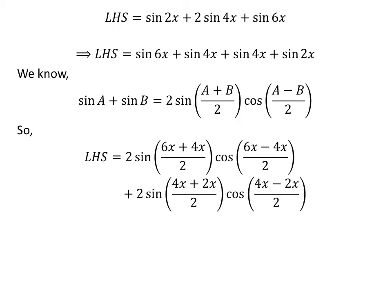Application of the above identity gives us the left hand side equal to 2 times sine of (6x plus 4x)/2 times cosine of (6x minus 4x)/2, plus 2 times sine of (4x plus 2x)/2 times cosine of (4x minus 2x)/2.